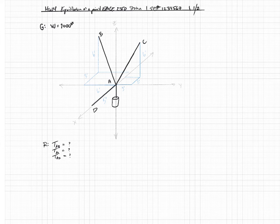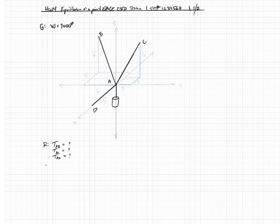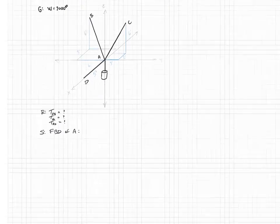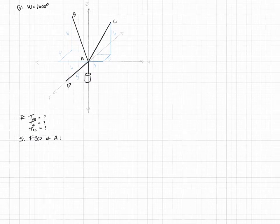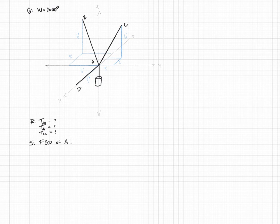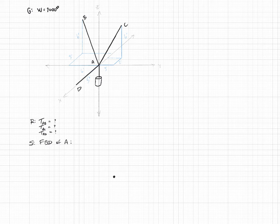To solve this, we're going to sum forces, because we know this thing's at equilibrium. Anytime you sum forces you're going to need a free body diagram. In this case we're going to do the free body diagram of point A. It's a redrawing of what I just did, except we take away all the noise and only show forces.